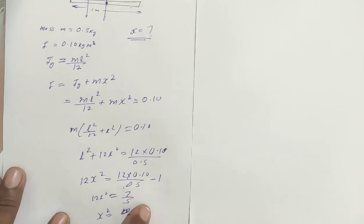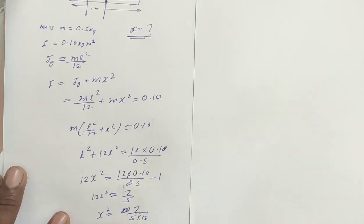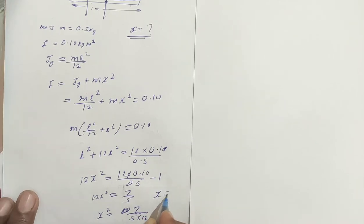We got x square, so now I will take the root and find x. After taking root, what will be x's value? When we take root, x square's value comes to 0.16. Its value becomes 0.118.